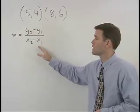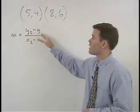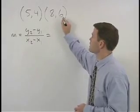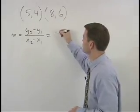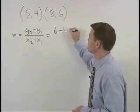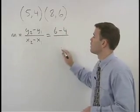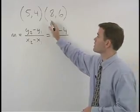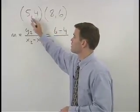In other words, we take our second y minus our first y, which in this case is 6 minus 4, over our second x minus our first x, which in this case is 8 minus 5.